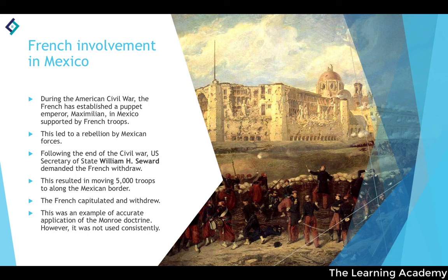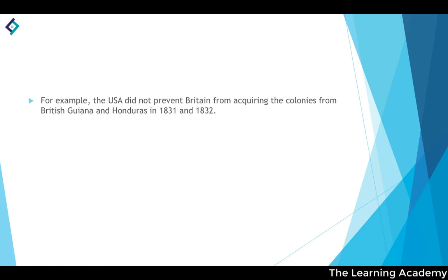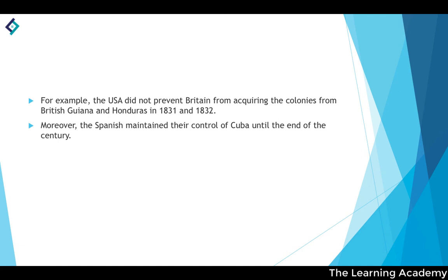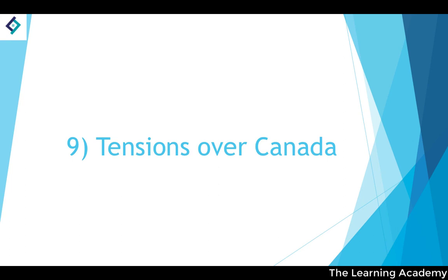However, during the Gilded Age the Monroe Doctrine wasn't applied consistently. For example, the USA didn't prevent Britain from acquiring colonies in British Honduras in the early 1830s, and Spain maintained control of Cuba until the end of the century — both contrary to the spirit of the Monroe Doctrine.